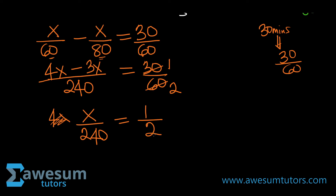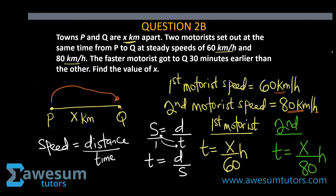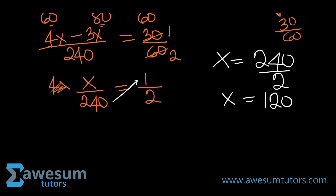So we have x over 240 equals 1 over 2. Cross multiplying gives x equals 240 times 1 divided by 2, which is 120. Therefore x is 120 kilometers — that is the distance from town P to town Q.